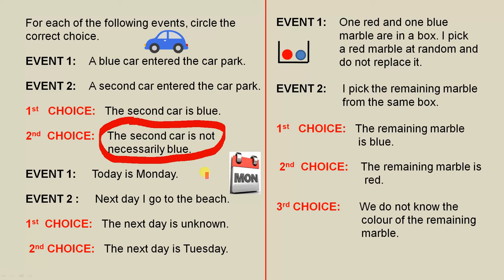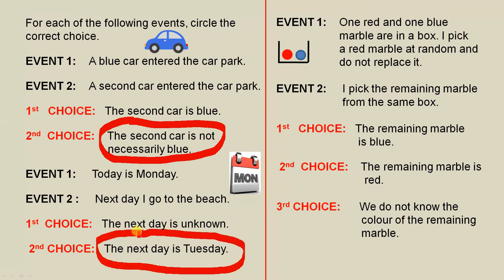Next example. Event one: today is Monday. Event two: next day, I go to the beach. Our choices are: the next day is unknown, or the next day is Tuesday. The correct answer is the next day is Tuesday, because Tuesday comes after Monday.